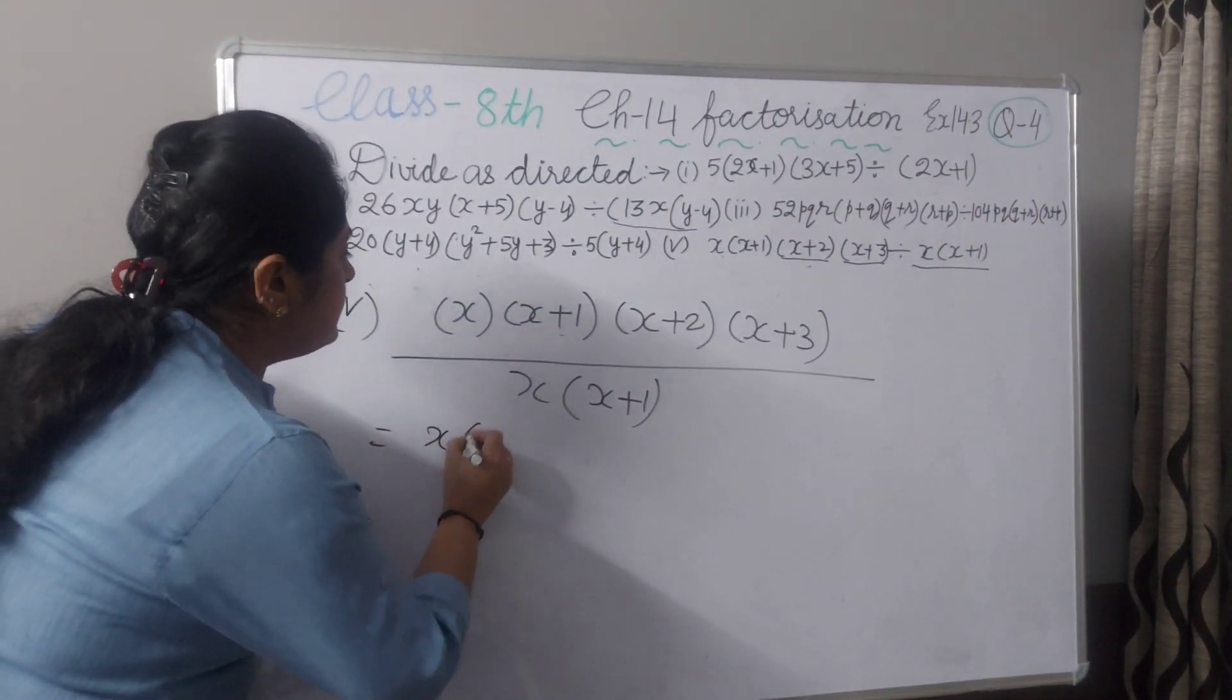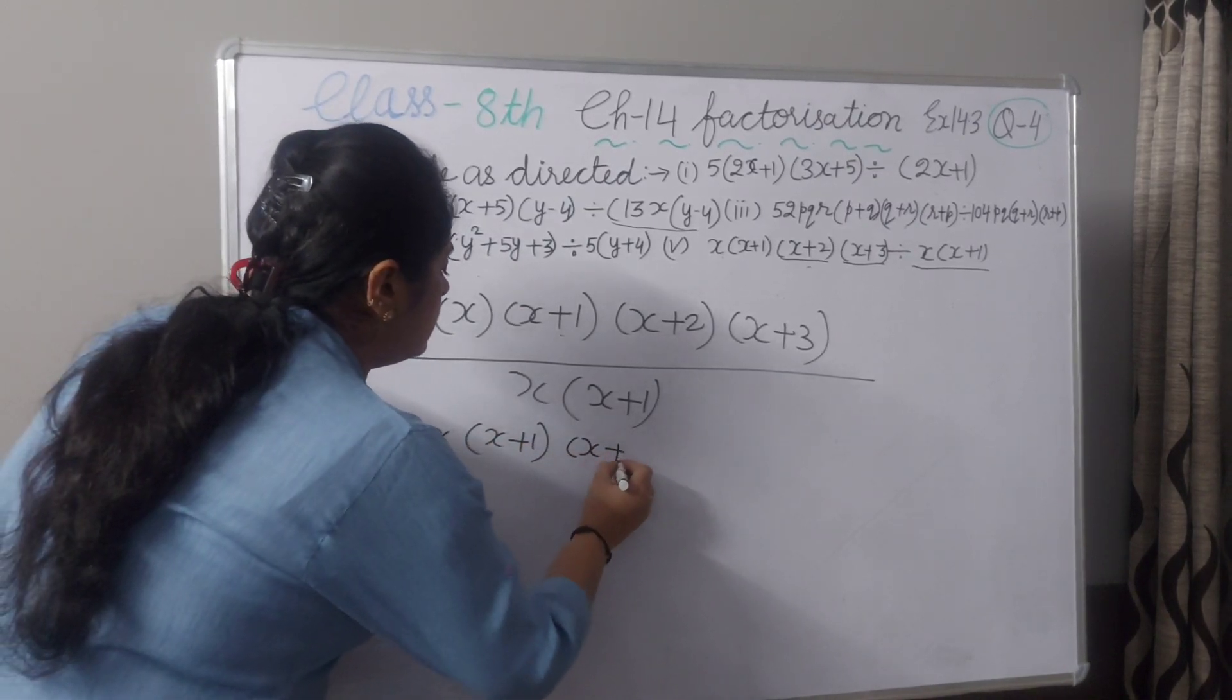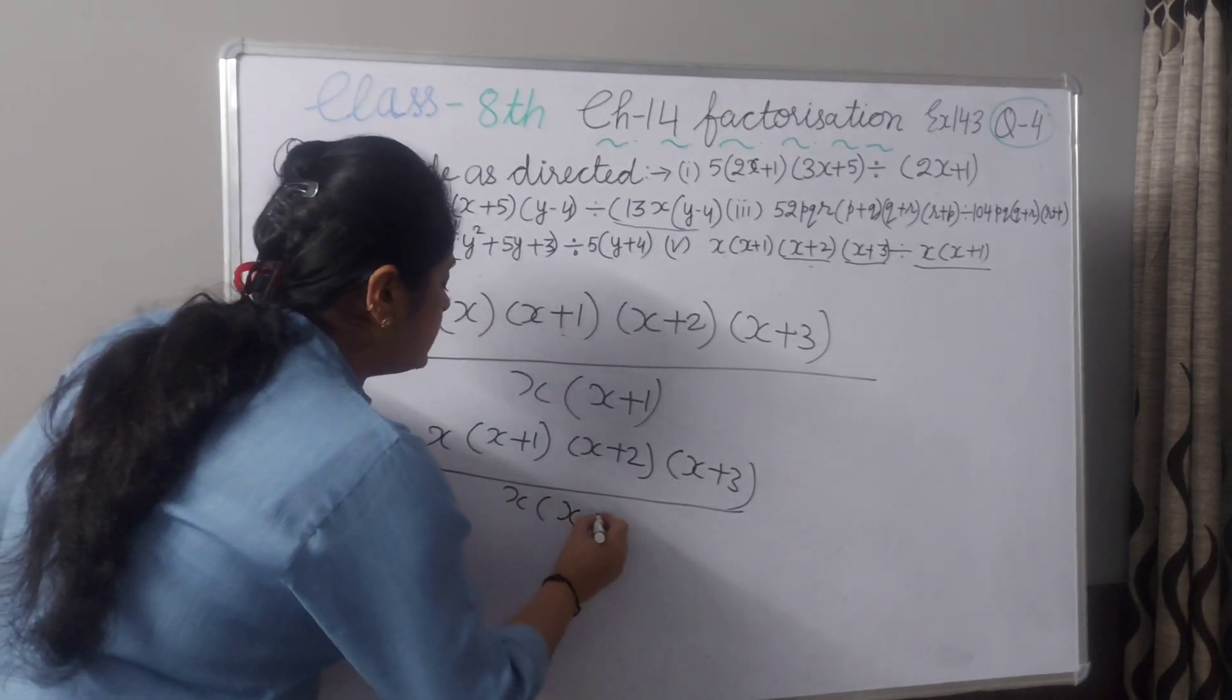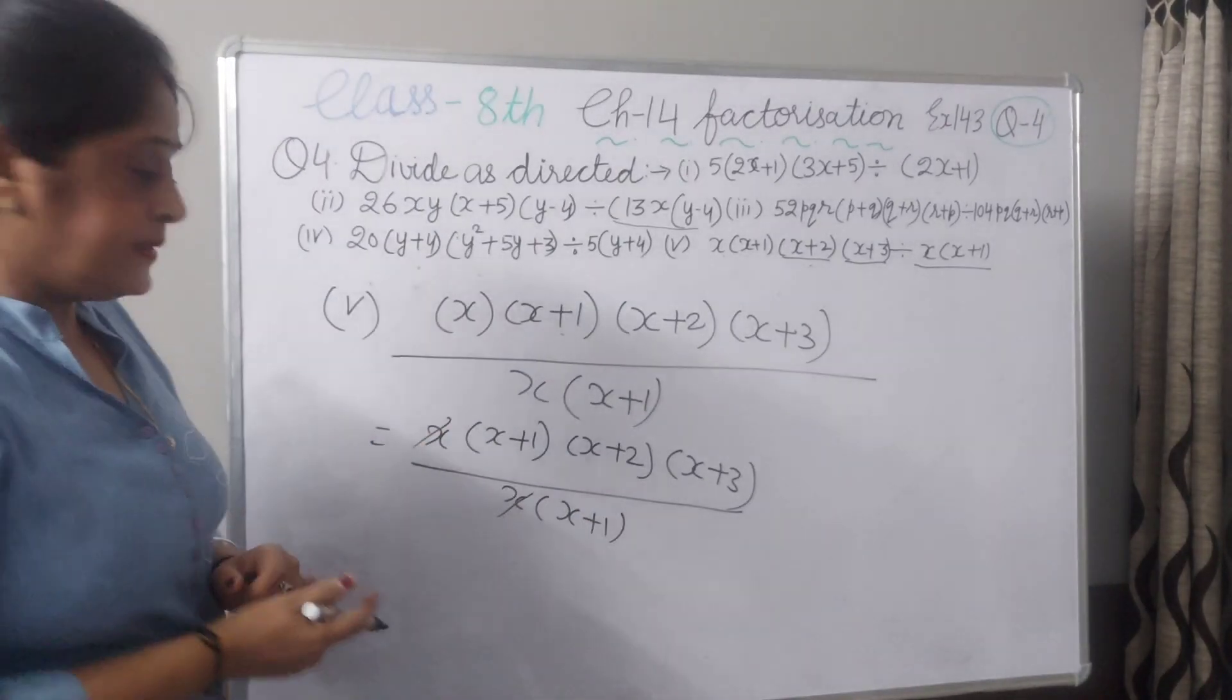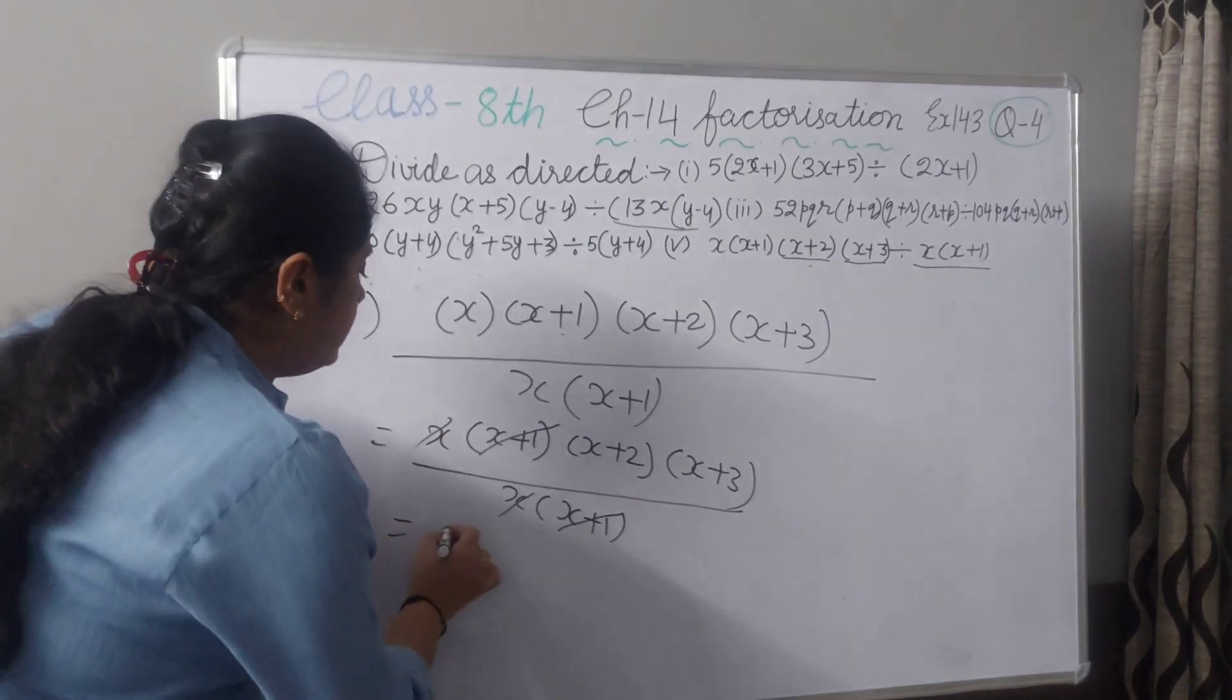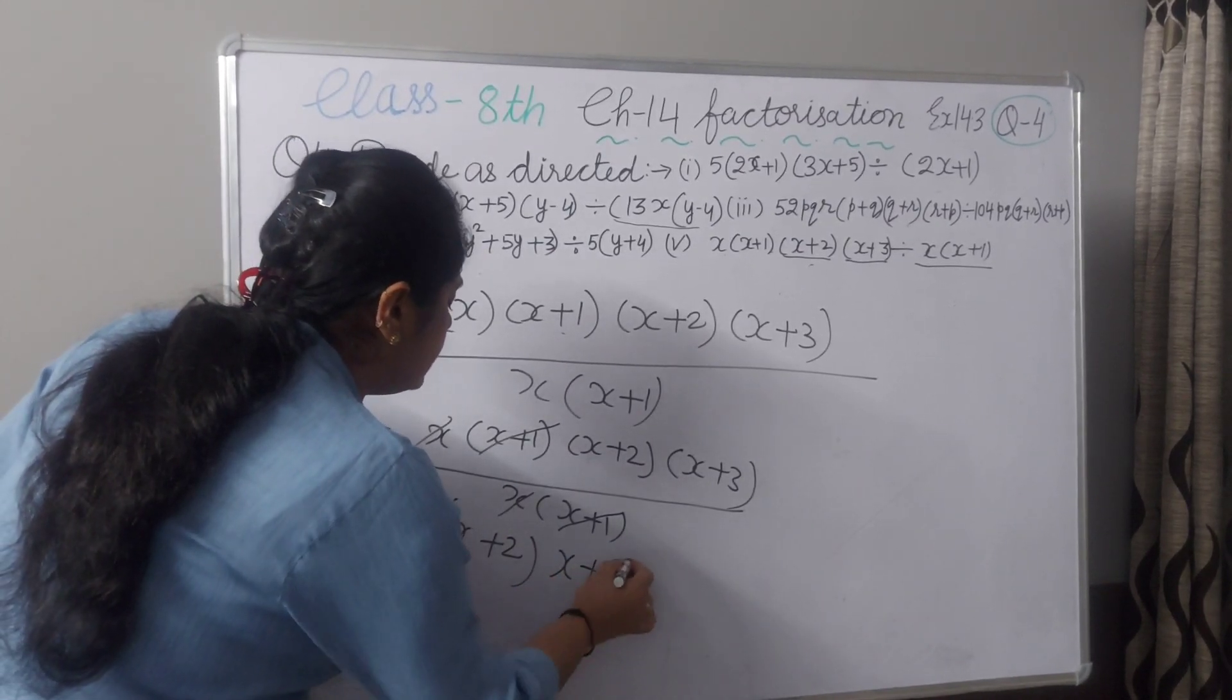First, the same statement you write here. x into x into x plus 1. Now see, x will be cancelled with this x. x plus 1 and this x plus 1 will be cancelled. And you will be left with x plus 2 and x plus 3.